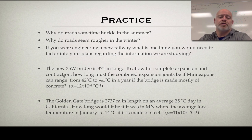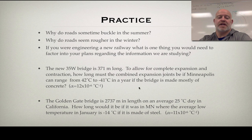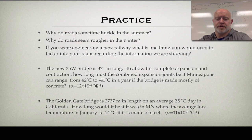Now, two problems for you — some true data. Our new 35W bridge is 371 meters long. If we're going to allow for complete expansion and contraction, how long must the combined expansion joints be if Minneapolis can range from 42°C to negative 41°C in a year, assuming the bridge is made mostly of concrete? The coefficient of thermal expansion for concrete is 12 × 10⁻⁶ per degree Celsius. So we know our original length, we know the coldest and warmest it gets, and we know our thermal expansion coefficient.